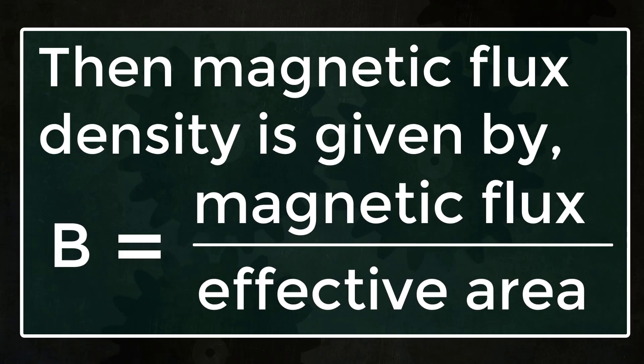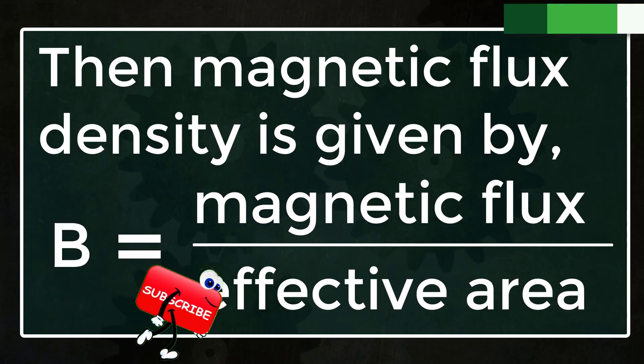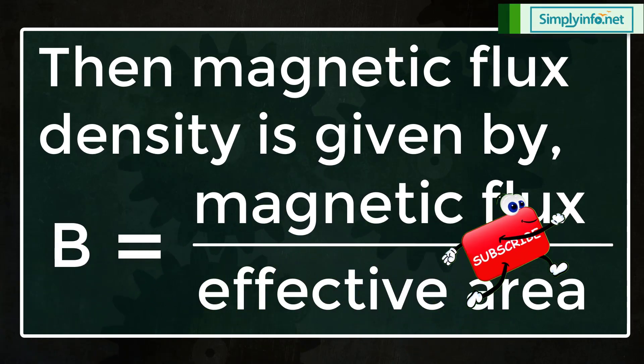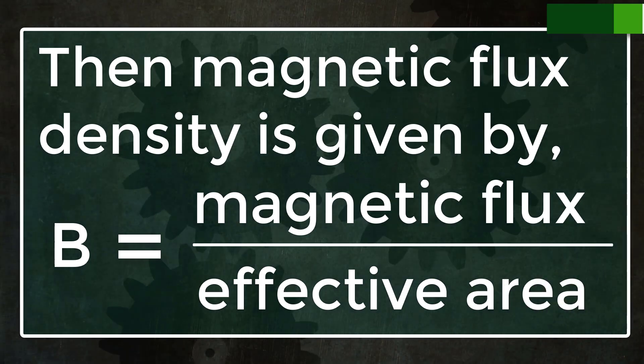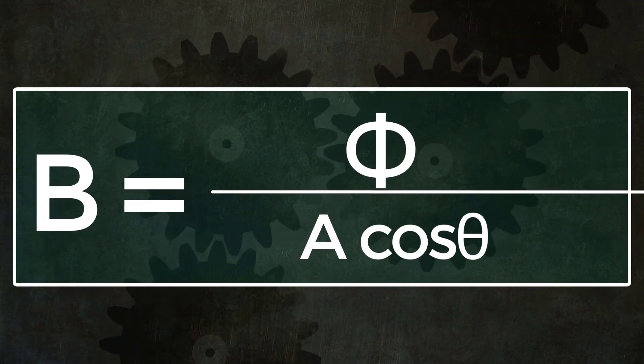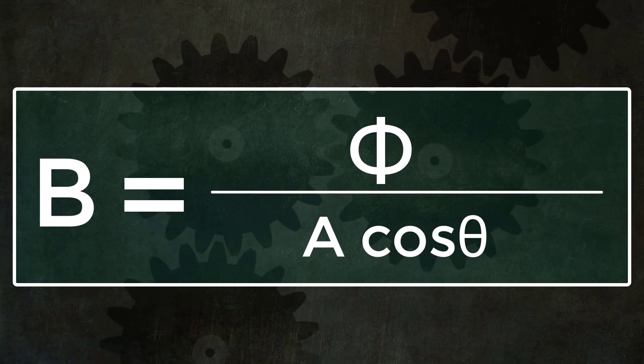Then magnetic flux density is given by B equals magnetic flux divided by effective area. This formula is used when the plane makes an angle with the field. Then B equals phi by A cos theta.